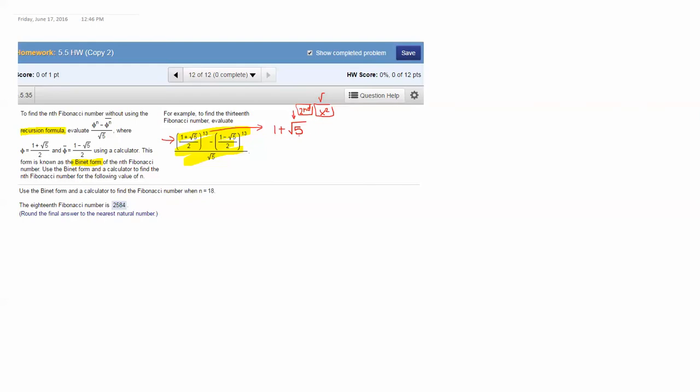So 1 plus the square root of 5, press equals because you want to add it together and get that answer, and then you're going to divide it by 2 and then press equals again. You should have a decimal 1.618033989.